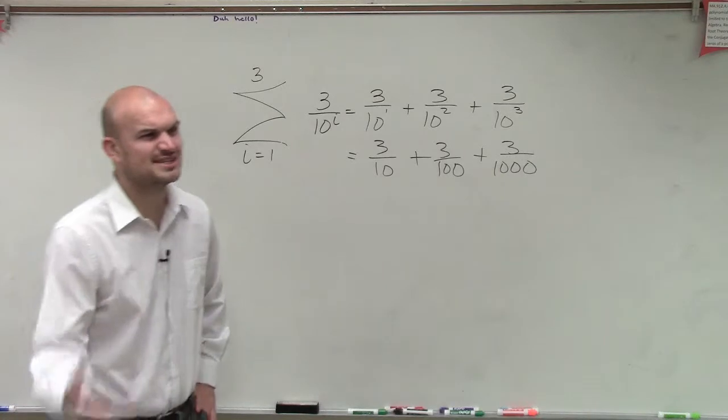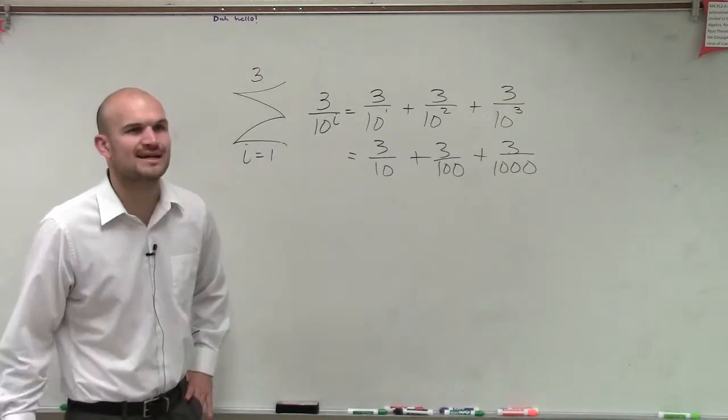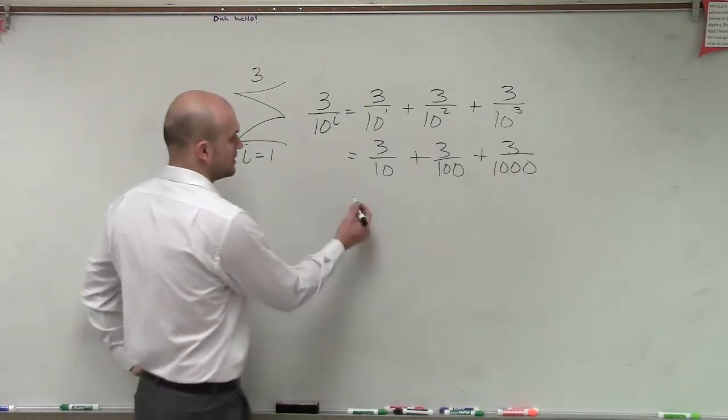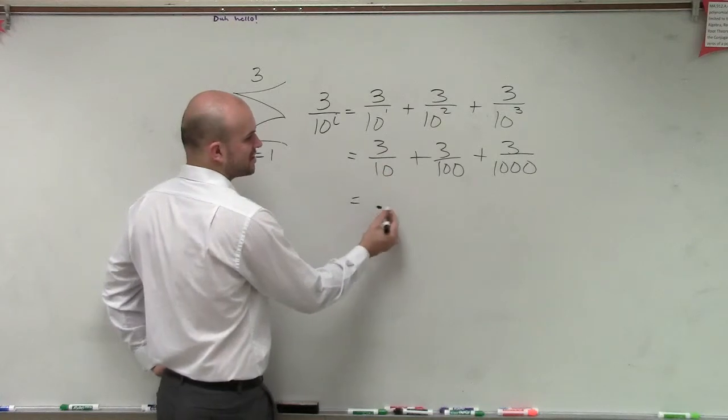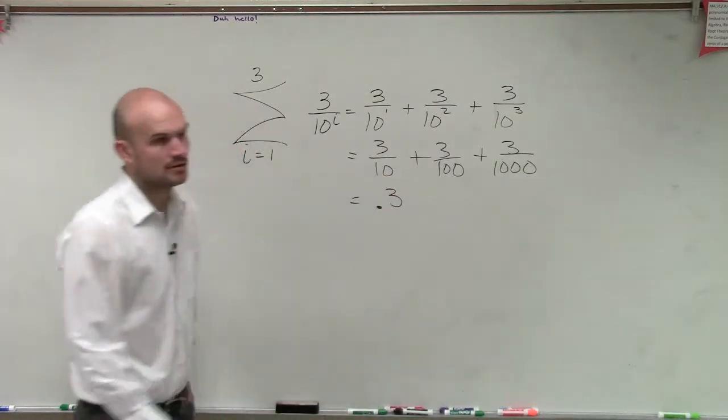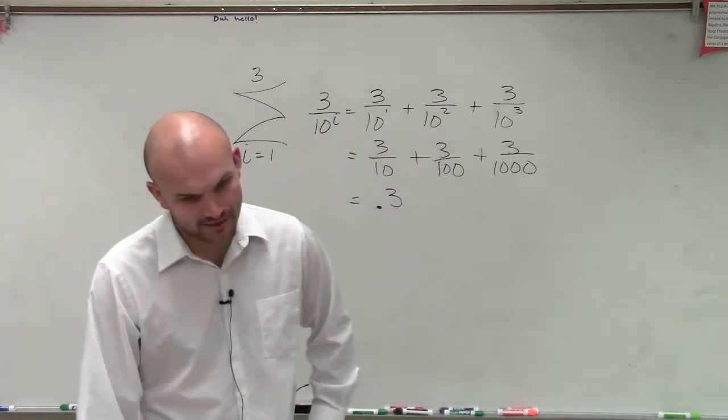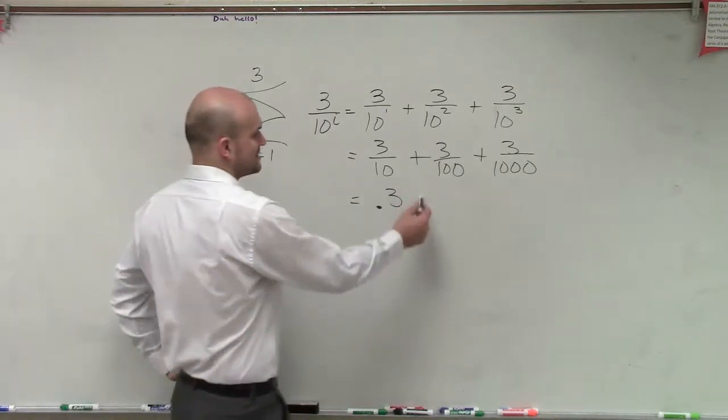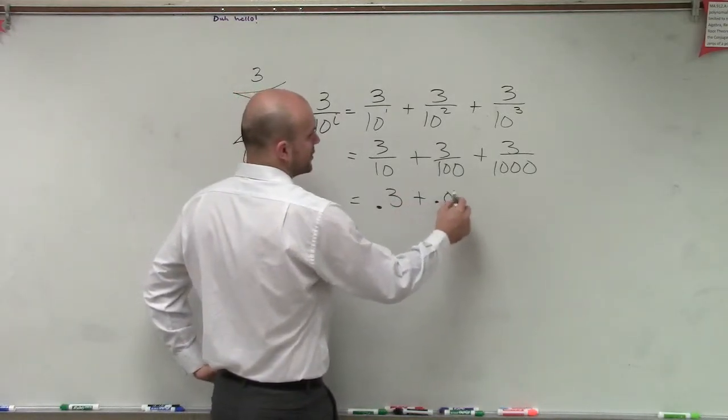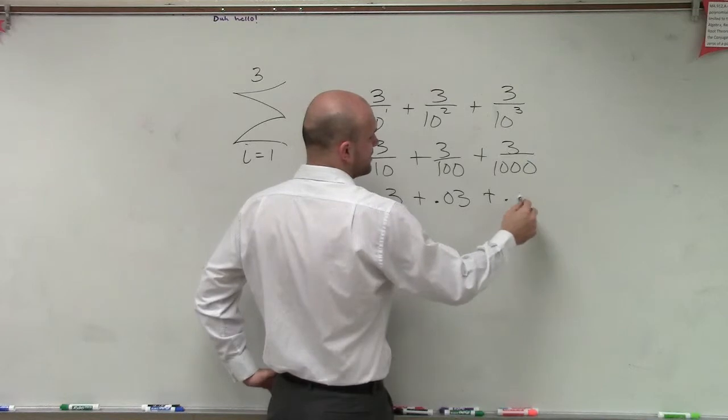Now let's go and convert these over to a decimal form to make a little bit more sense of them. So decimal form of this is just going to be 0.3, then we could say this is going to be plus 0.03 plus 0.003.